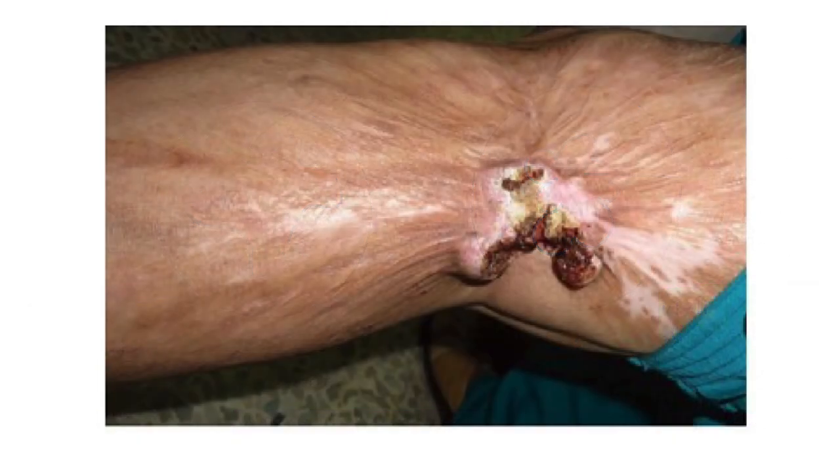This is a clinical photograph of Marjolin's ulcer. This is an ulcerative variety. Appreciate the averted edges of the ulcer. Averted edges are characteristic of squamous cell carcinoma, and squamous cell carcinoma is the most common histopathological type of Marjolin's ulcer.